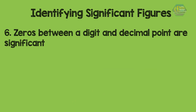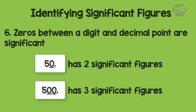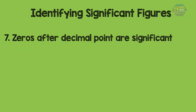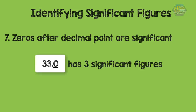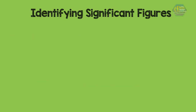Number six: zeros between a digit and decimal point are significant. For example, 50 has two significant figures and 500 has three significant figures. Seventh rule: zeros after the decimal point are significant. For example, 33.0 has three significant figures and 11.00 has four significant figures. We can write numbers in scientific notation to change their number of significant figures.